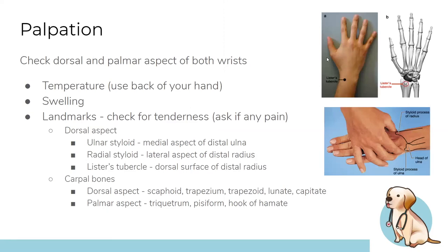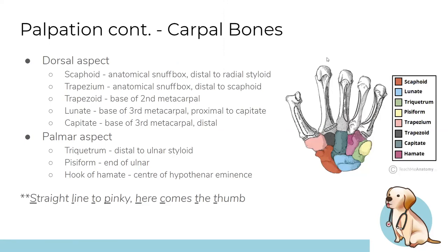For the wrist exam: inspection looks for ganglion cysts, ulnar deviation seen in rheumatoid or psoriatic arthritis, and radial deviation. Landmarks include the ulnar and radial styloids, Lister's tubercle, and all carpal bones. The mnemonic 'straight line to pinky, here comes the thumb' helps remember carpal bones. On the back of the hand, extend the thumb to find the anatomical snuffbox: the scaphoid sits distally, then the trapezium. Following the second metacarpal shows the trapezoid; the third metacarpal dip reveals the lunate (proximal) and capitate (distal). On the front, the triquetrum sits distal to the ulnar styloid, and the pisiform is also palpable.